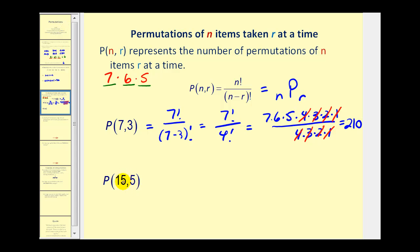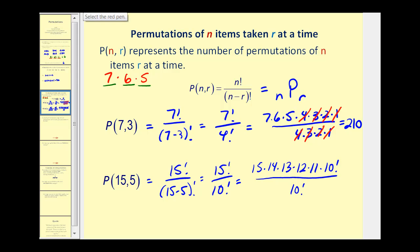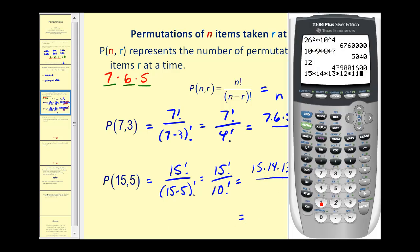For the second question we have fifteen permute five. That's equal to fifteen factorial over fifteen minus five factorial, which is fifteen factorial over ten factorial. Notice that from a certain point the numerator continues as ten times nine times eight and so on — that's ten factorial — and the denominator is also ten factorial, so they simplify out. Using a calculator to determine this product gives us 360,360.